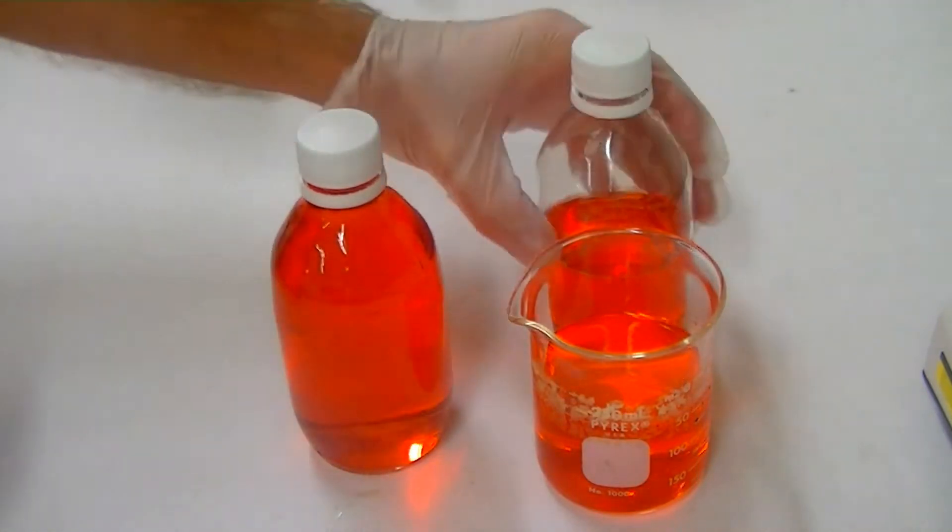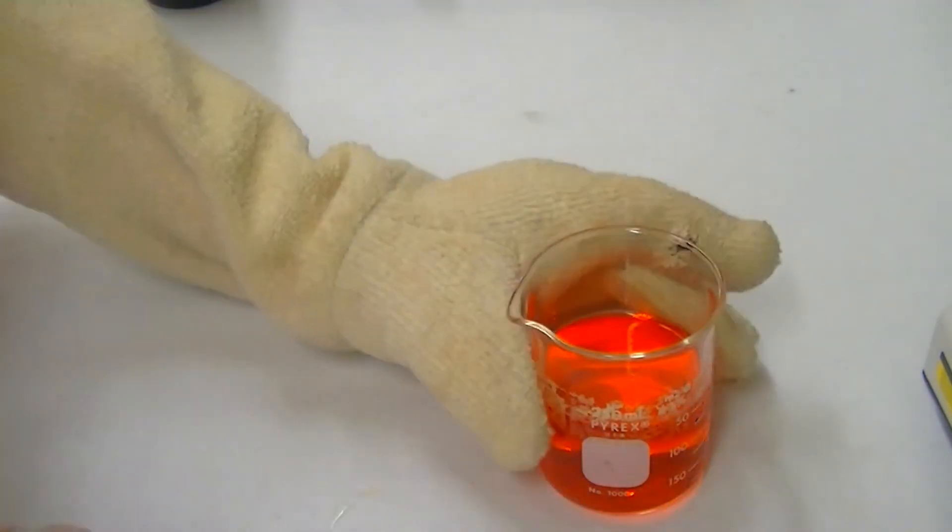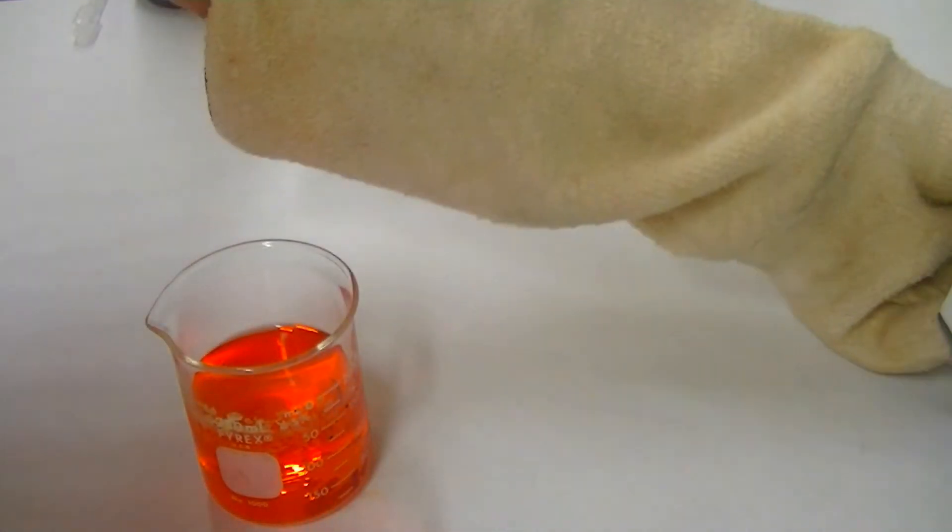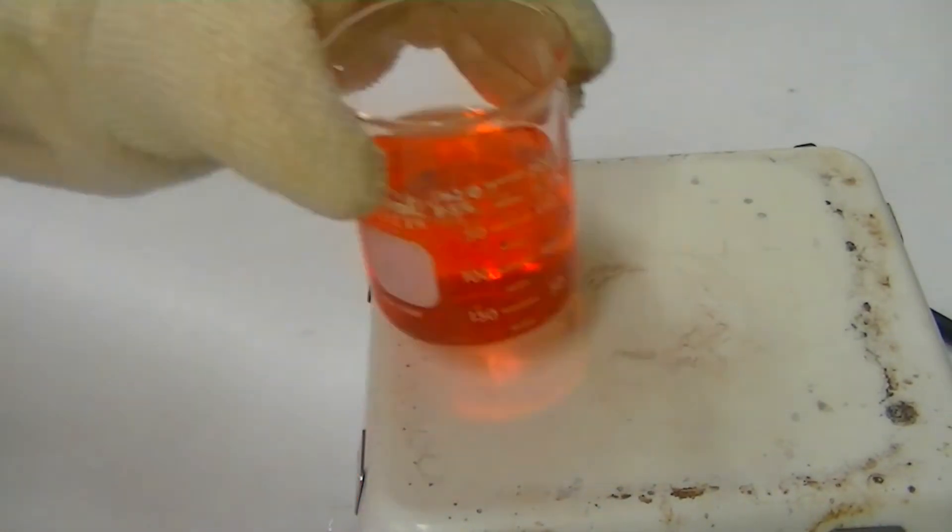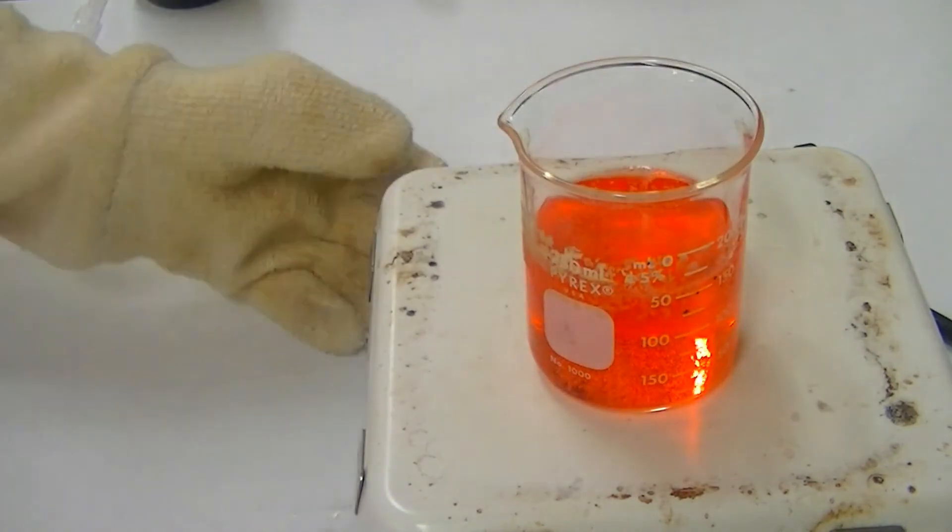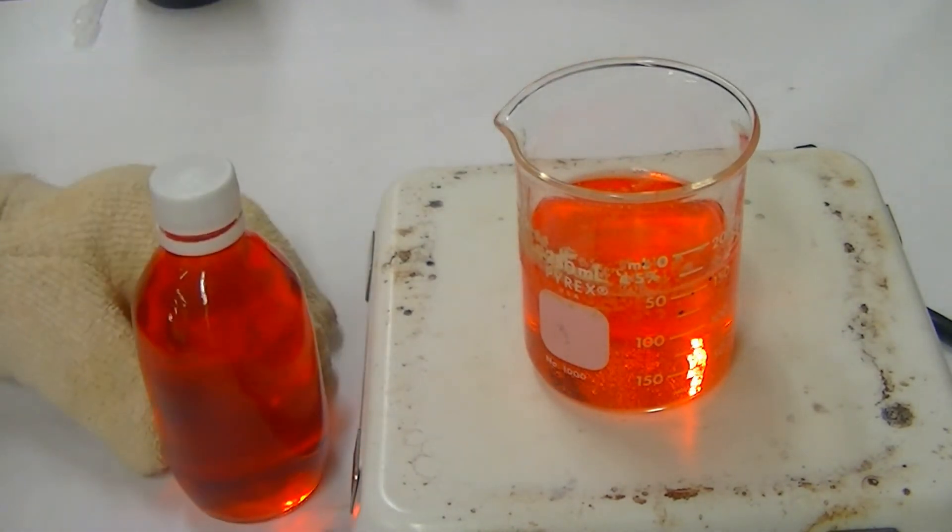we'll remove the carbon dioxide from club soda by boiling it. As you can see, these bottles of club soda have had universal indicator added to them. Let's keep this second sample of club soda nearby so we can compare colors.